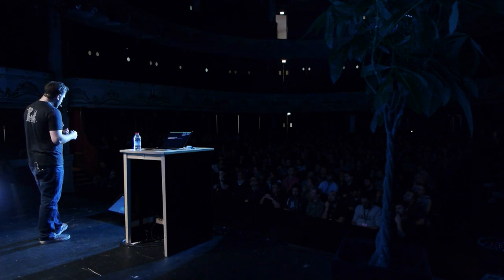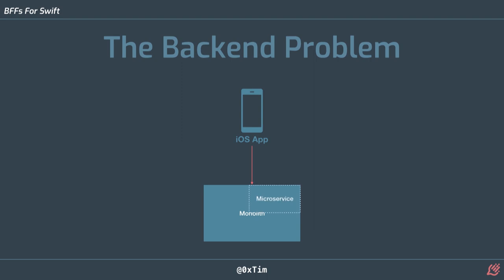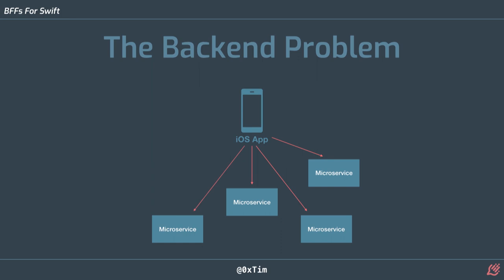It doesn't stop there. A lot of companies these days are moving from monolithic backends to microservices. So your iOS app might be talking to its back end quite happily, and then your back end team decides they're doing microservices — splitting out functionality into a separate microservice. You then need to update your app, call that microservice instead, go through the app store review process, and do this for all the different parts of your app. You end up with tens and tens of endpoints to track and keep updated.